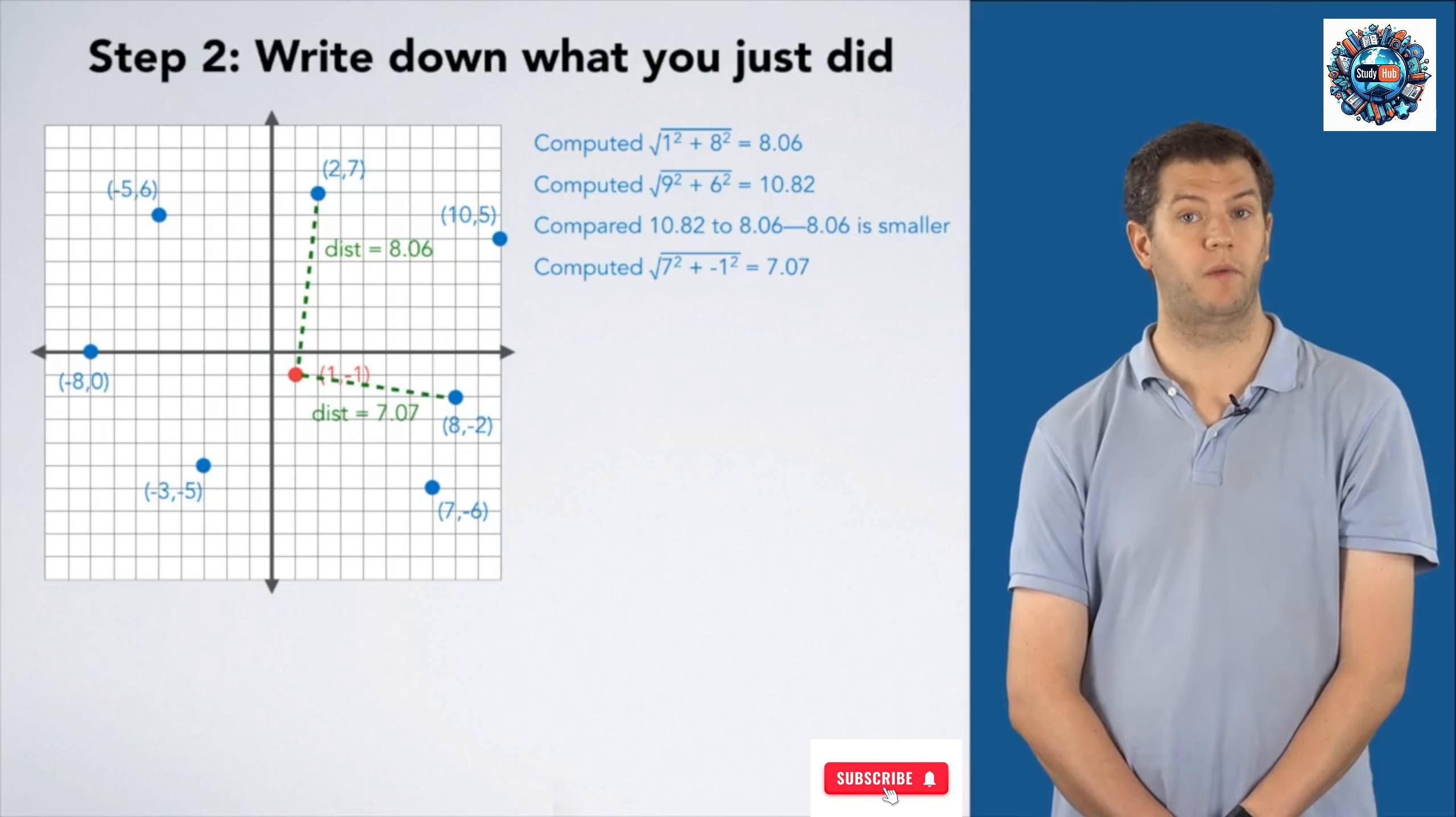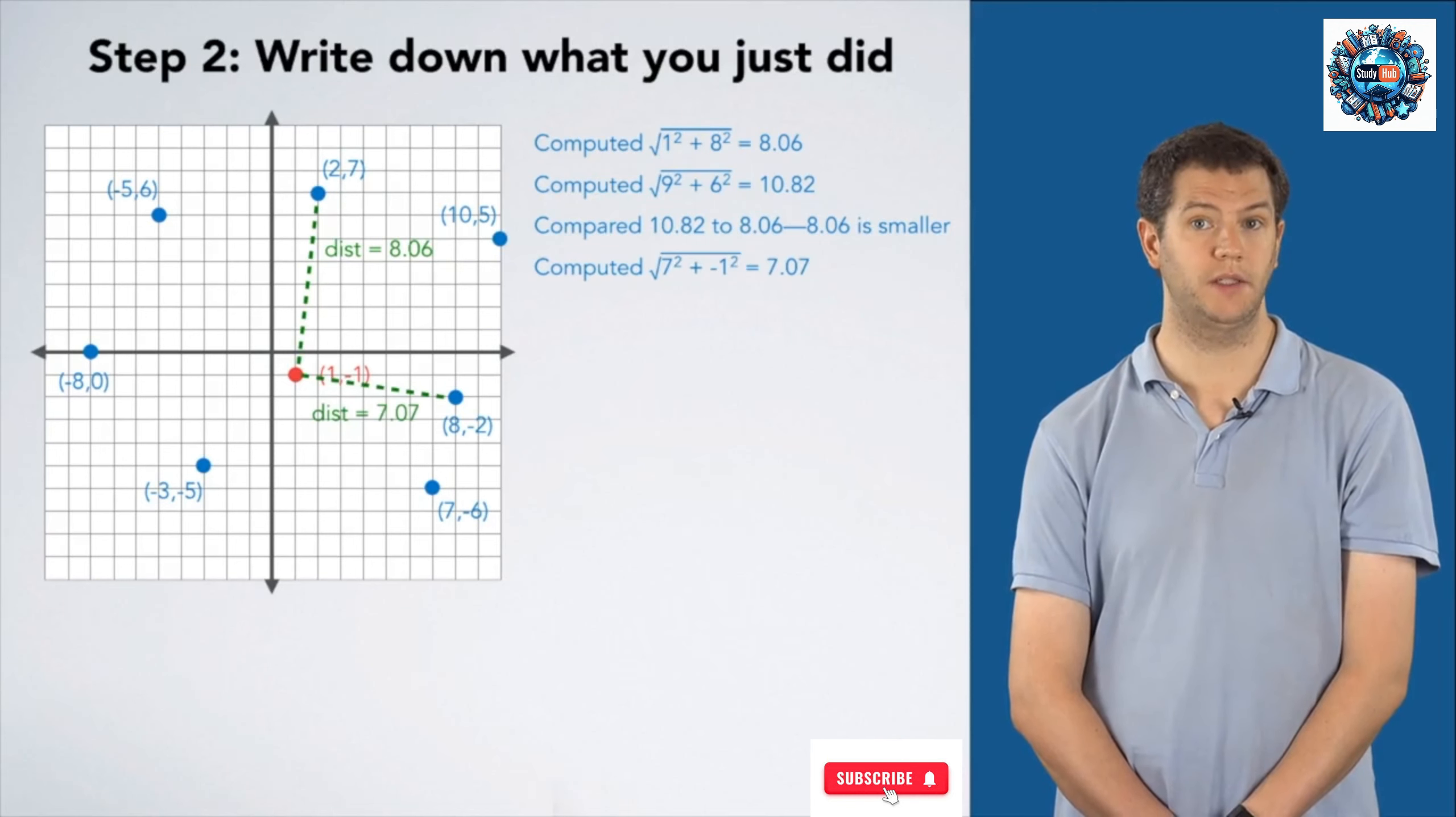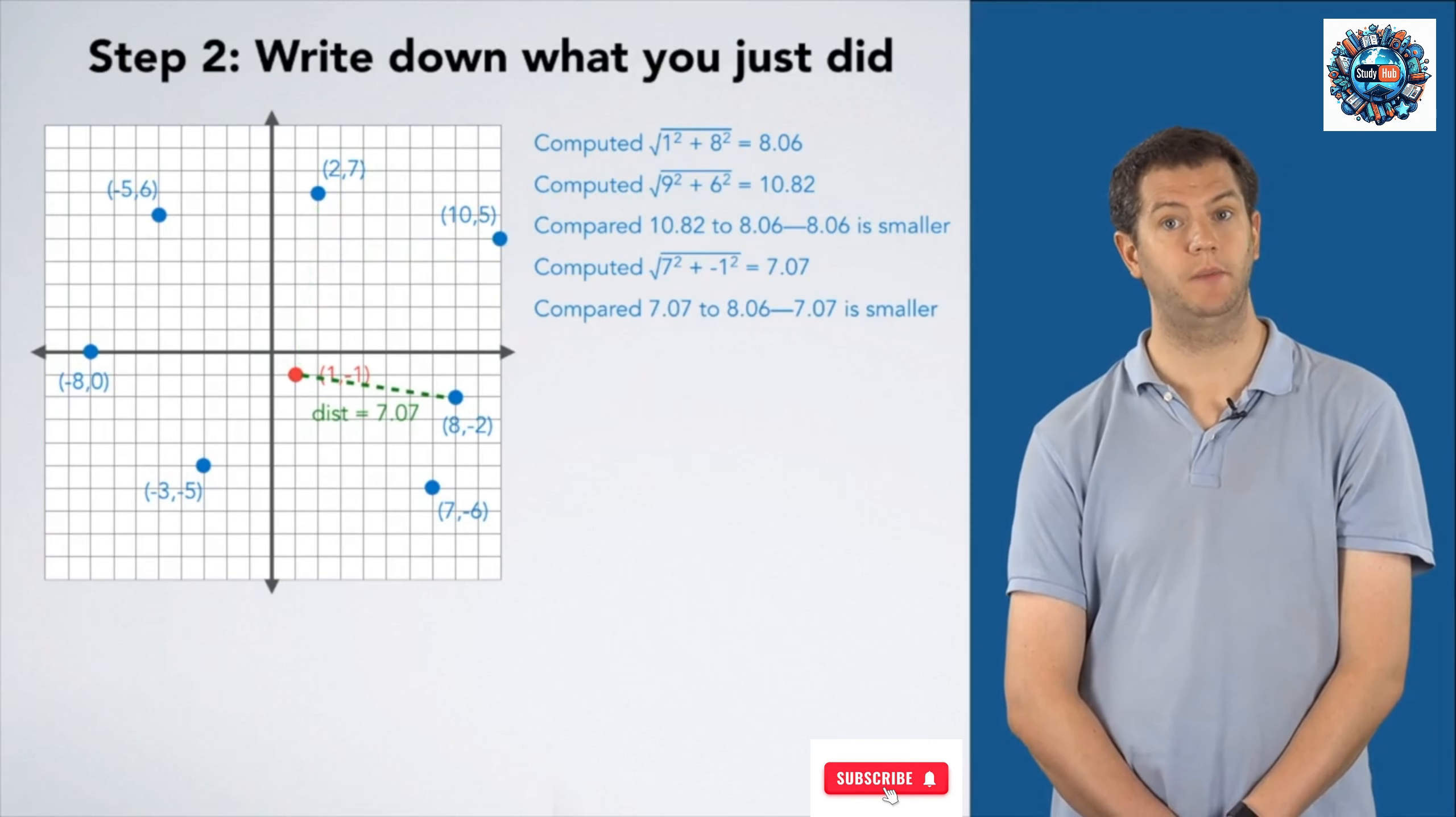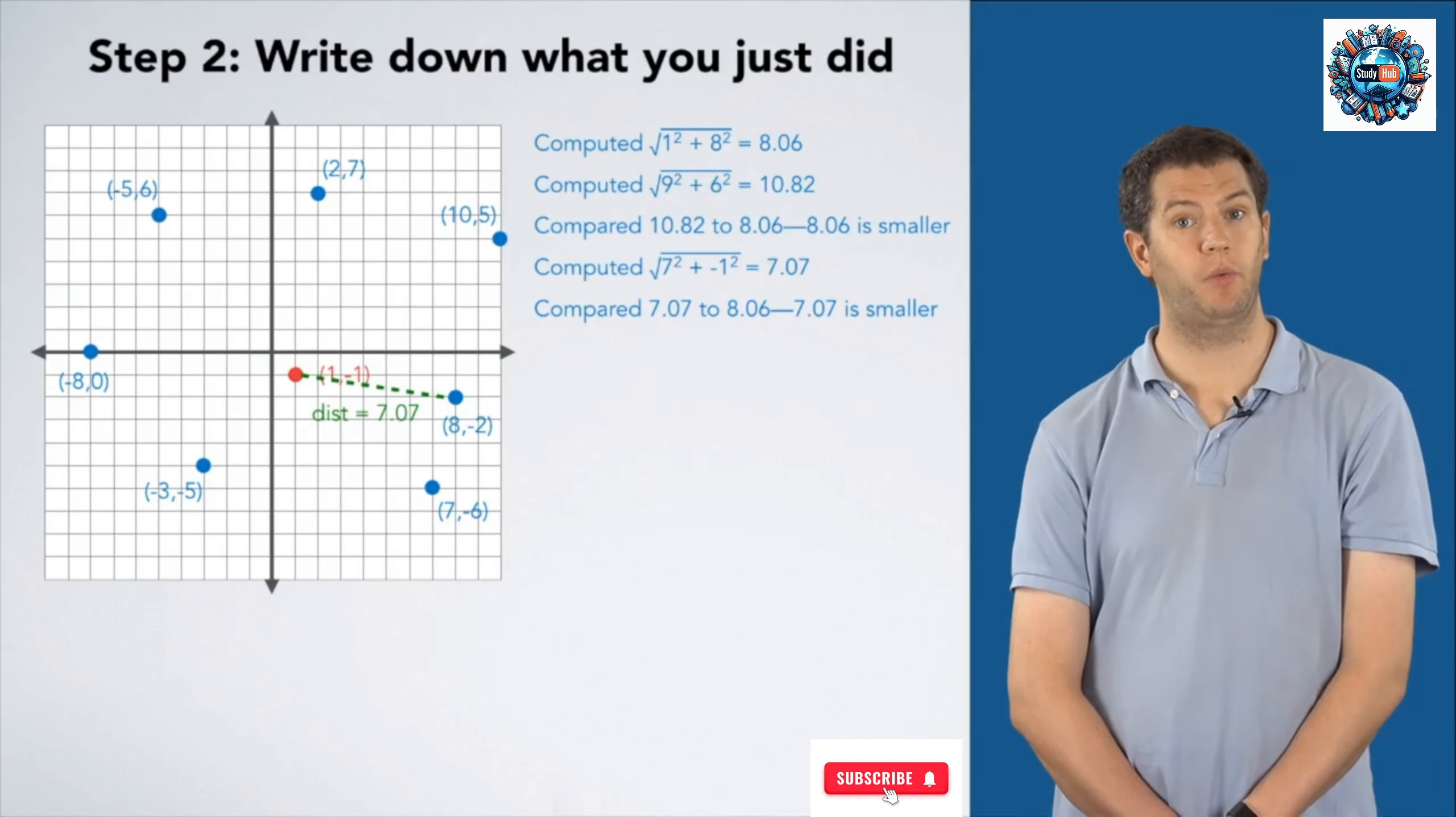I computed the square root of 7² + (-1)², and got 7.07. And, I compared 7.07 to 8.06, and said 7.07 is smaller, so this is a better choice.